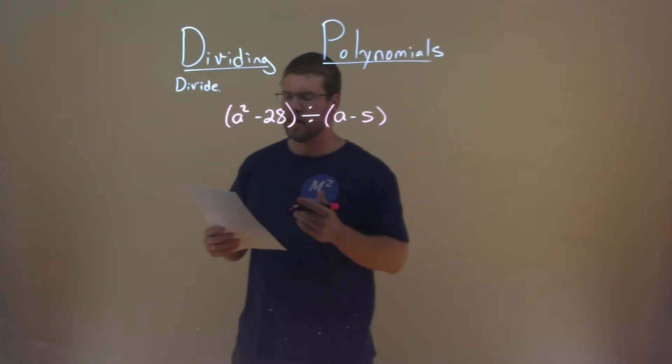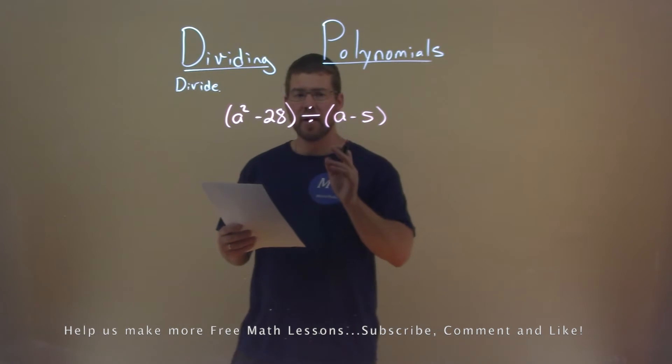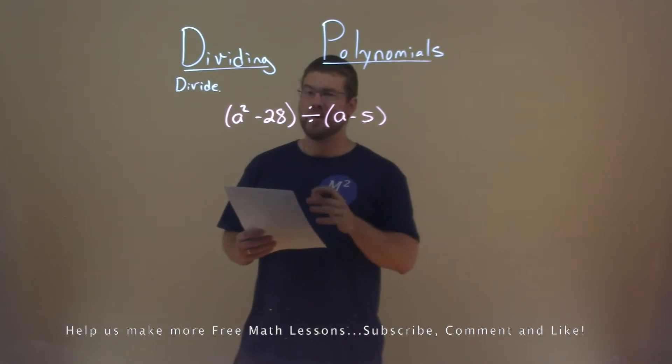We're given this problem right here, a squared minus 28, divided by a minus 5, and we need to divide this.